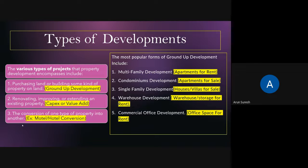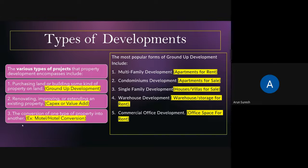Let's talk in detail about ground up development. Multi-family development refers to apartments built for rent. Condominium developments are apartments built and sold to users. Single-family development is building individual houses and villas for sale. Warehouse development is building industrial property to rent to various users — for example, distributors like Amazon. Then there is commercial office development, where you build an office and rent it out to various tenants who need space.